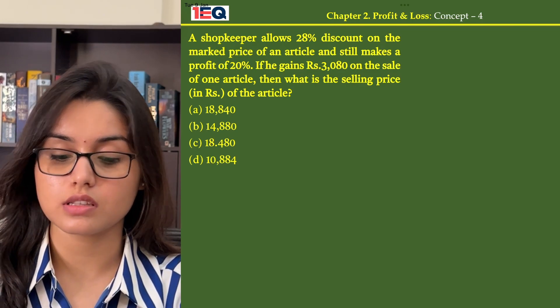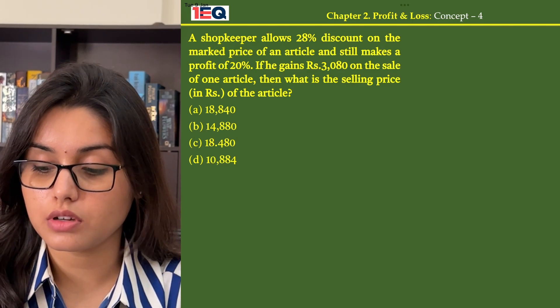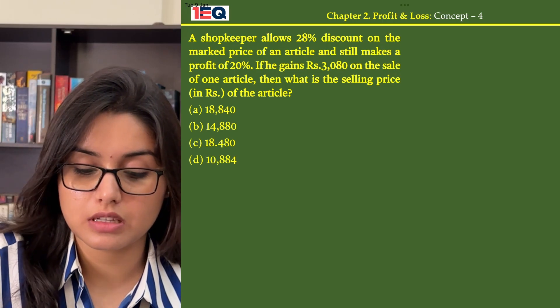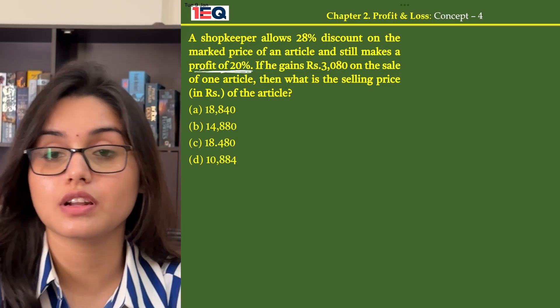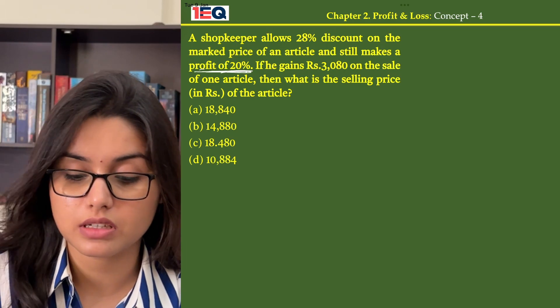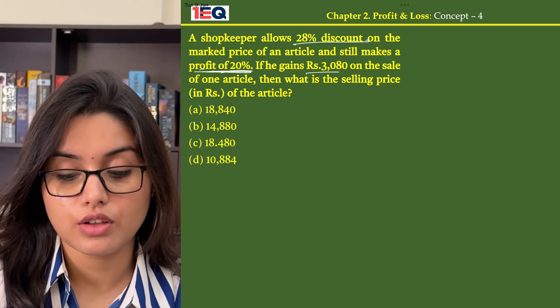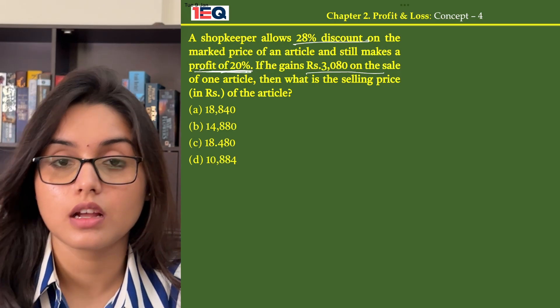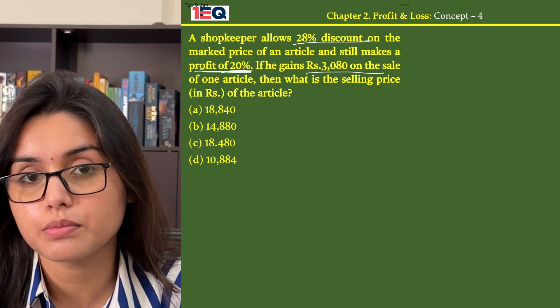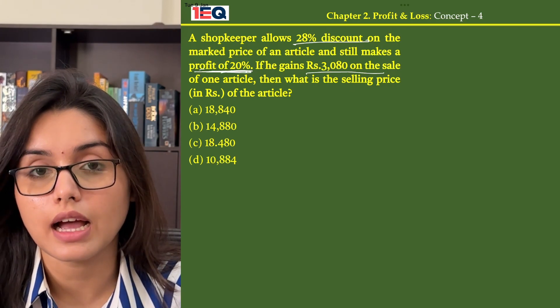In this question they have told us that the shopkeeper earns a 20% profit, that is profit is 20%, even after giving a 28% discount. His gain amount is given as 3,080 rupees.